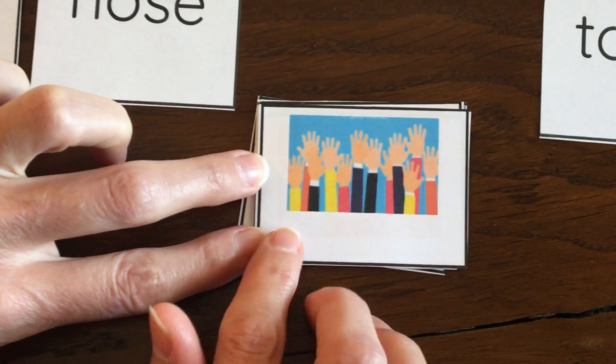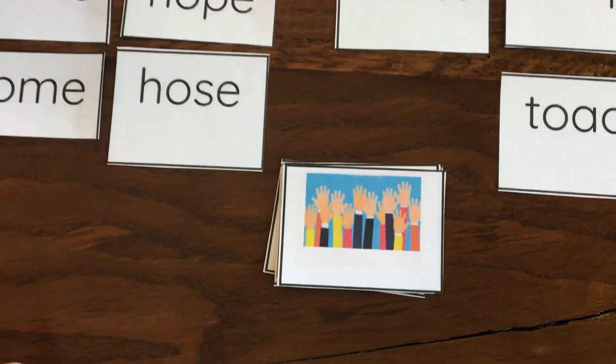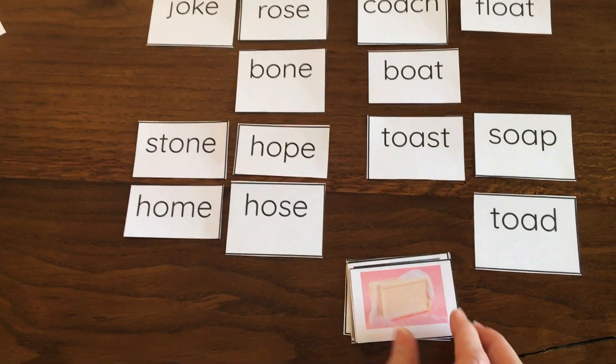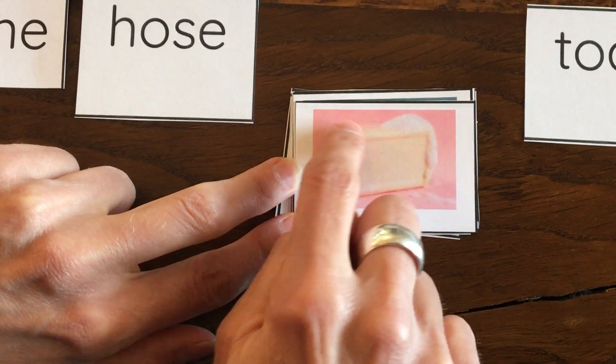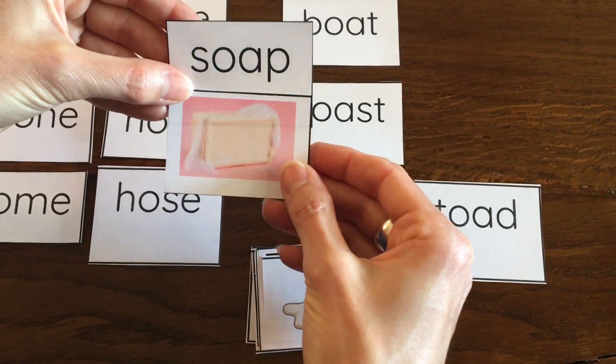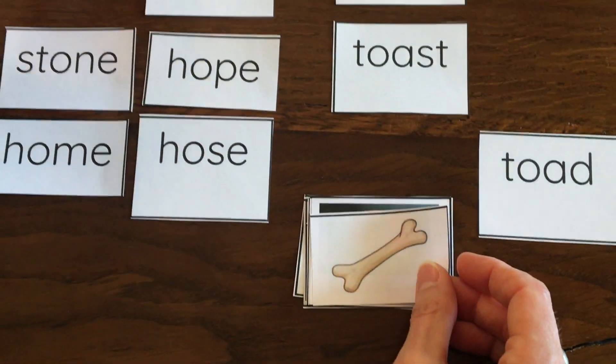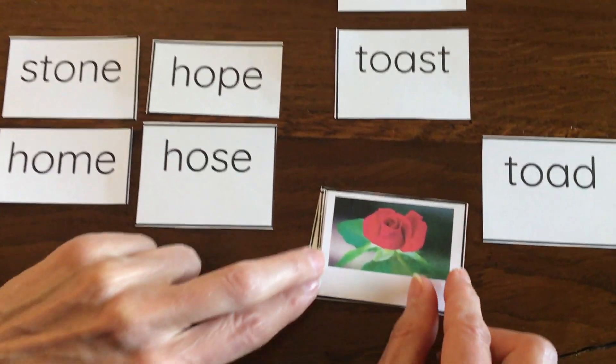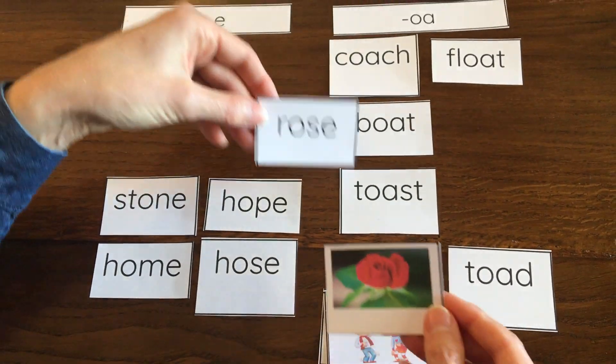Look at all these hands up. They are taking a vote to see what decision they should make. There's vote. Let's match those two. This is a little hard to see, but this is a bar of soap with all the bubbles. Here's our word soap and here's our picture. This is a bone that a dog would love to chew. Bone. And this flower is a rose. They have a wonderful smell. Rose.